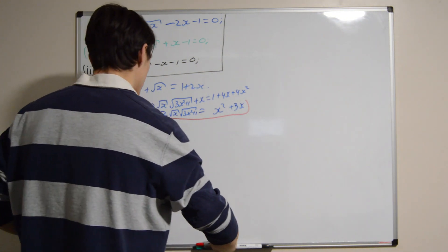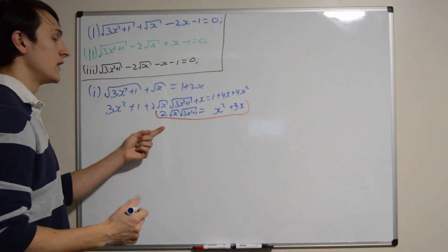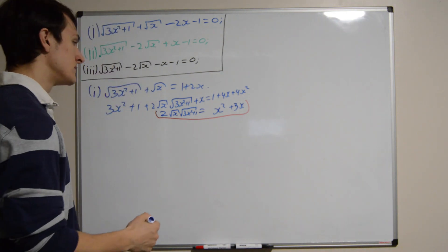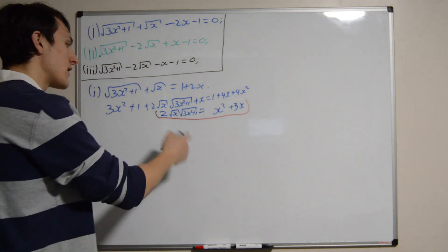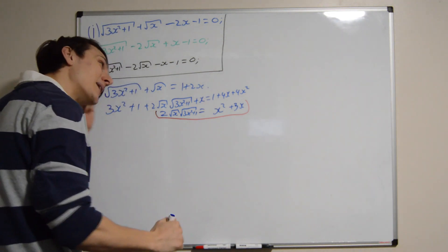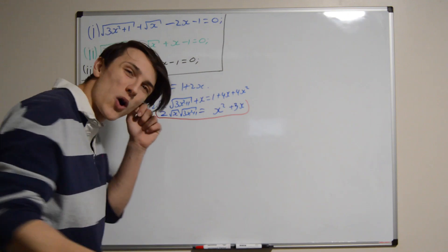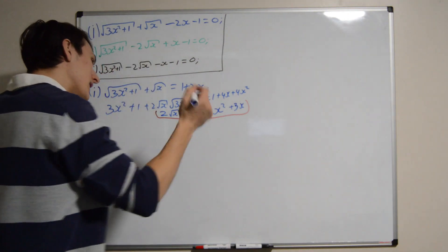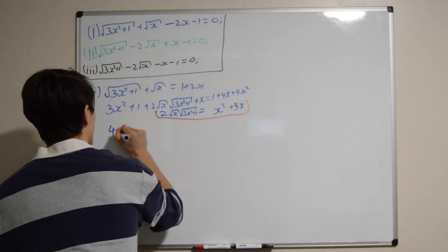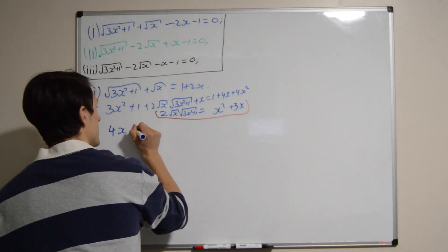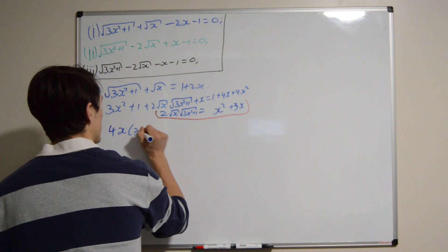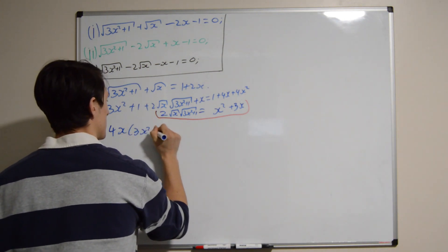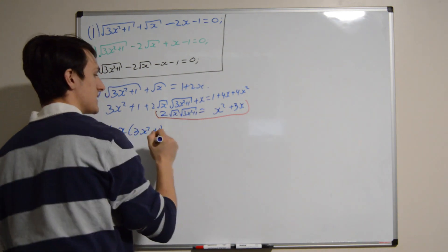And now let's just go from there. We have this line — we still have a square root. Well, if I square again, I'm definitely going to get rid of the square roots on the left hand side, but I'm going to end up with a quartic on the right hand side. Well, it's worth it, let's just go for it. So we're going to get 4x times 3x squared plus 1 on the left hand side.